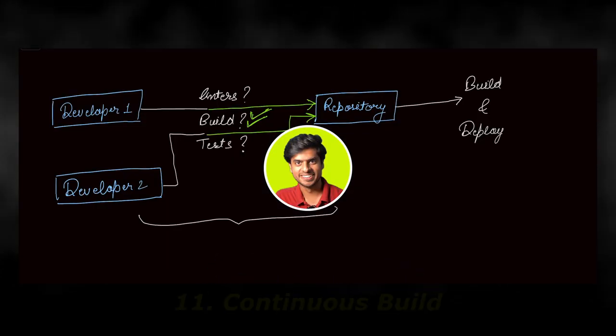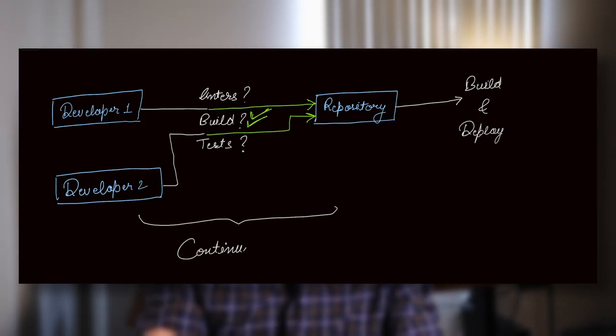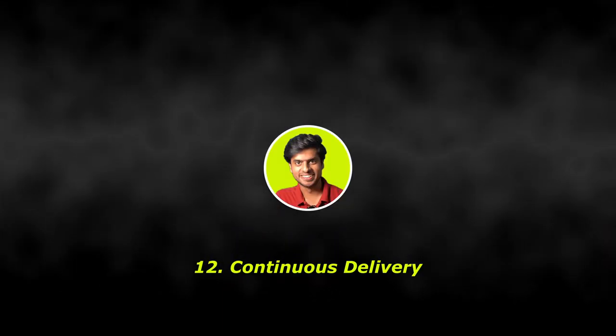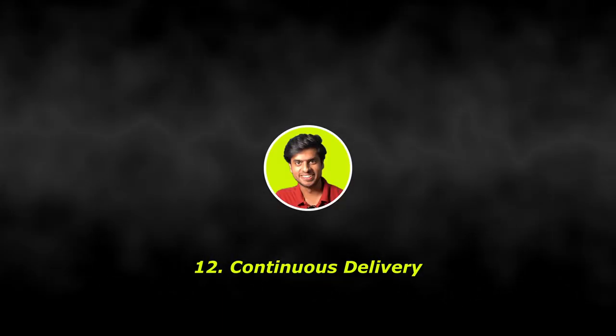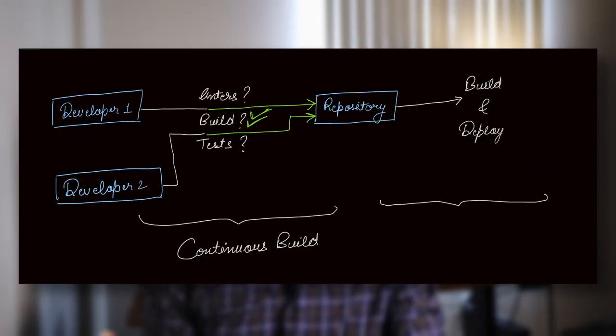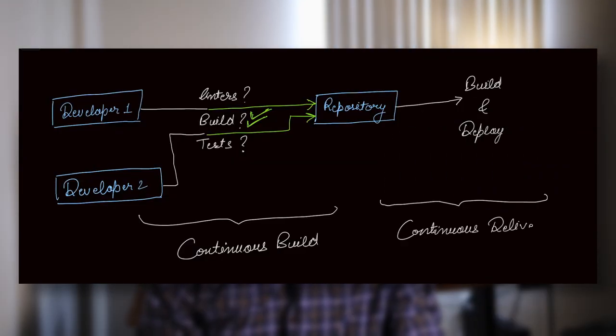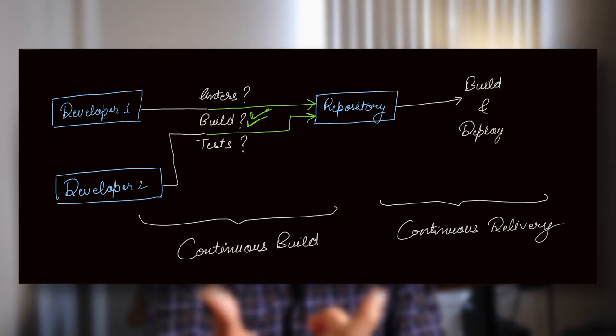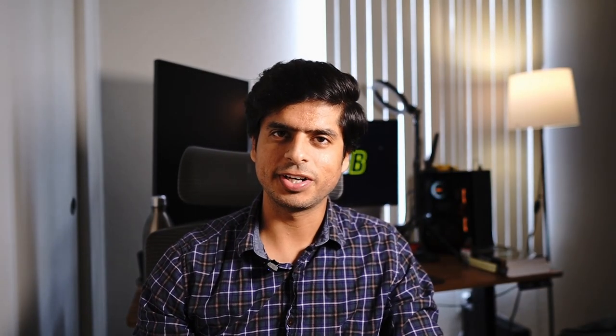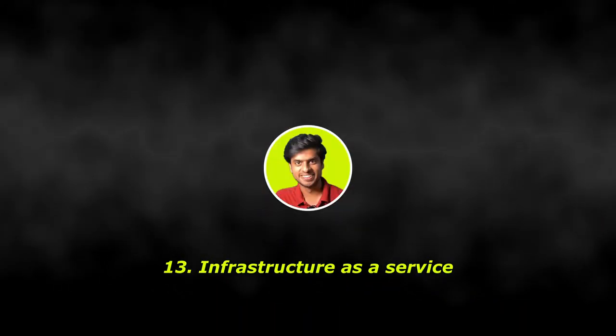Eleventh: continuous build — a sub-part of CI that comprises just the build and testing part. Twelfth: continuous delivery — also a sub-part of CI, but comprising just the automated release part of it.